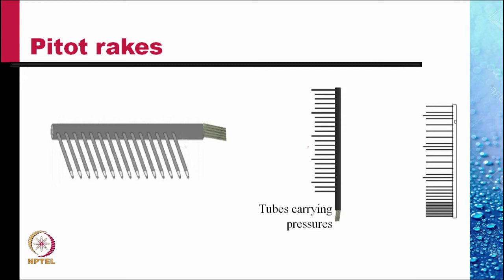A pitot rack consists of a number of pitot tubes attached to a supporting structure. Each pitot tube is connected to a flexible tube, and if there are 15 tubes, there will be 15 flexible tubes coming out. Each tube picks up the pitot pressure at a specific location. These are then connected to a multi-tube manometer where you can read the pressure difference, which is directly related to the velocity.